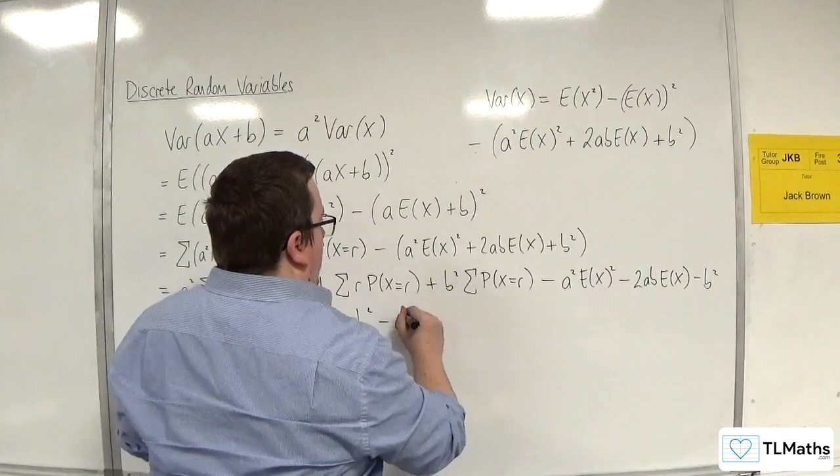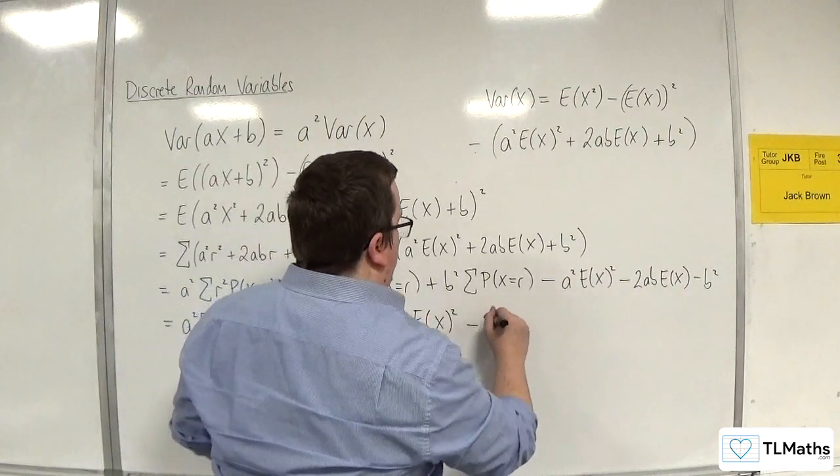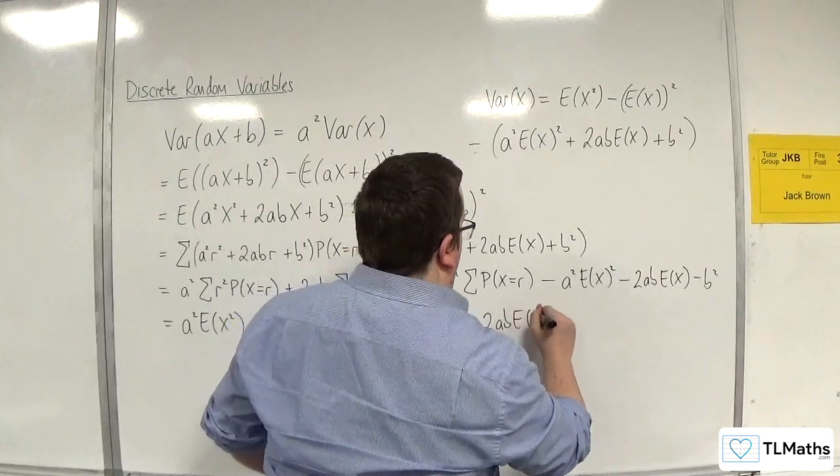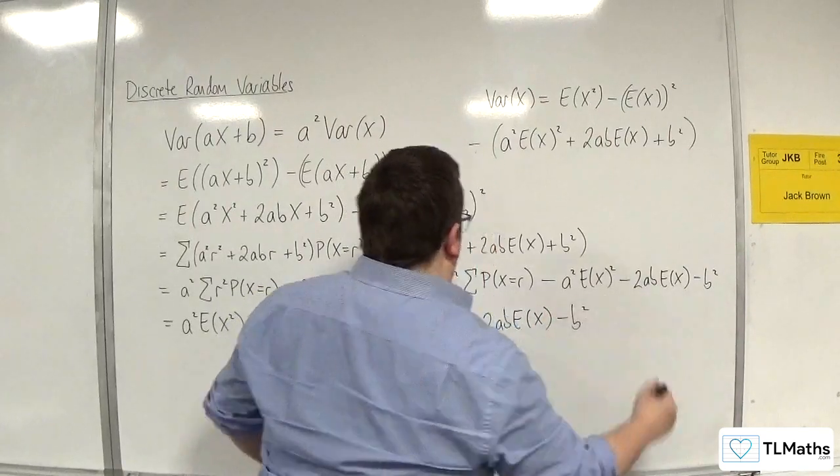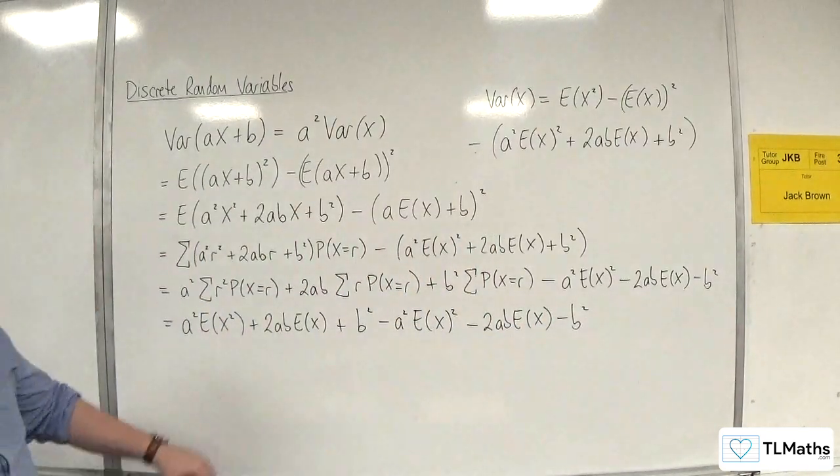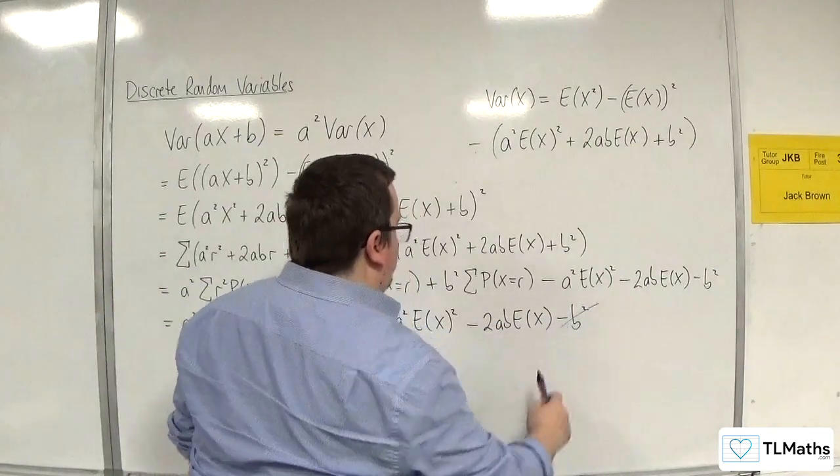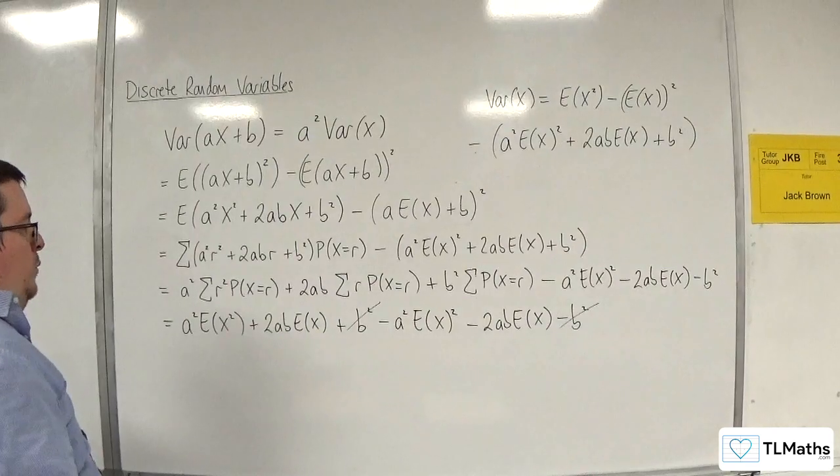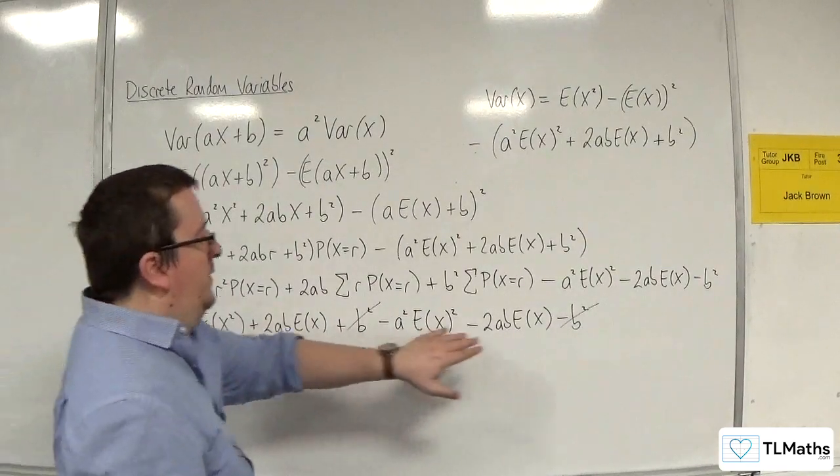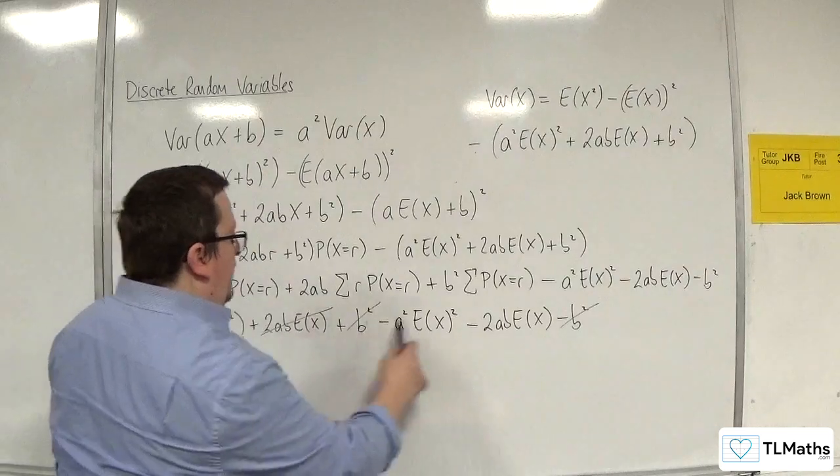And we're taking away a squared e of x all squared. Take away 2ab e of x. Take away b squared. So we've got the b squareds cancelling. They're gone. We've got the 2ab e of x take away 2ab e of x. So they're gone.